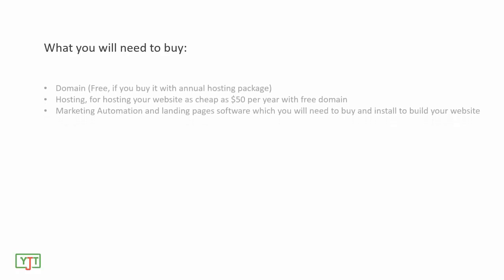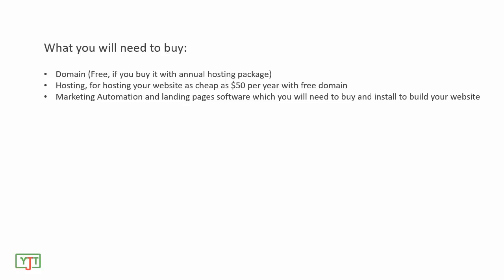Coming to what you will need to buy: the first thing you will need is a domain name — I will show you how you can get a domain for free. The second thing you will need is hosting; I will show you how to buy hosting for as cheap as $50 per year, and you will get a domain for free. The last thing you will need to buy is marketing automation and landing pages software, which you will need to install to build your website. In the next module, I will walk you through buying hosting and landing pages software.